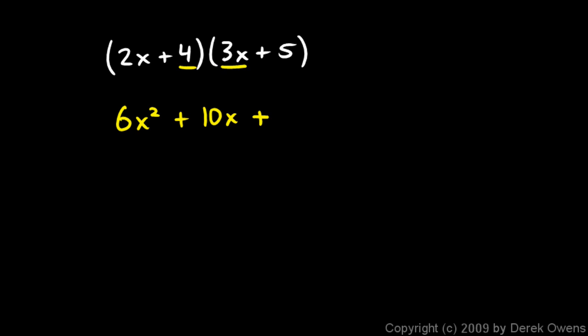And then the inner two terms are the 4 and the 3x. When I multiply those together, I get 12x. And my last two terms are 4 times 5, and that's 20. So each of those came from one letter in the FOIL: first, outer, inner, and last. And then the 10x and the 12x can be combined, and that will be 22x. So my answer is going to be 6x² + 22x + 20.